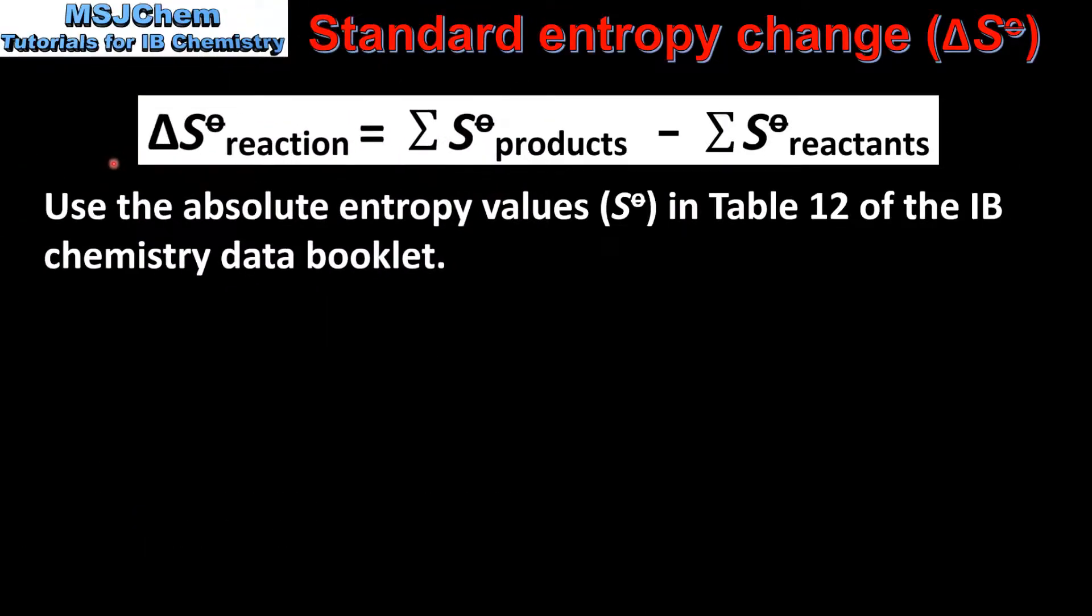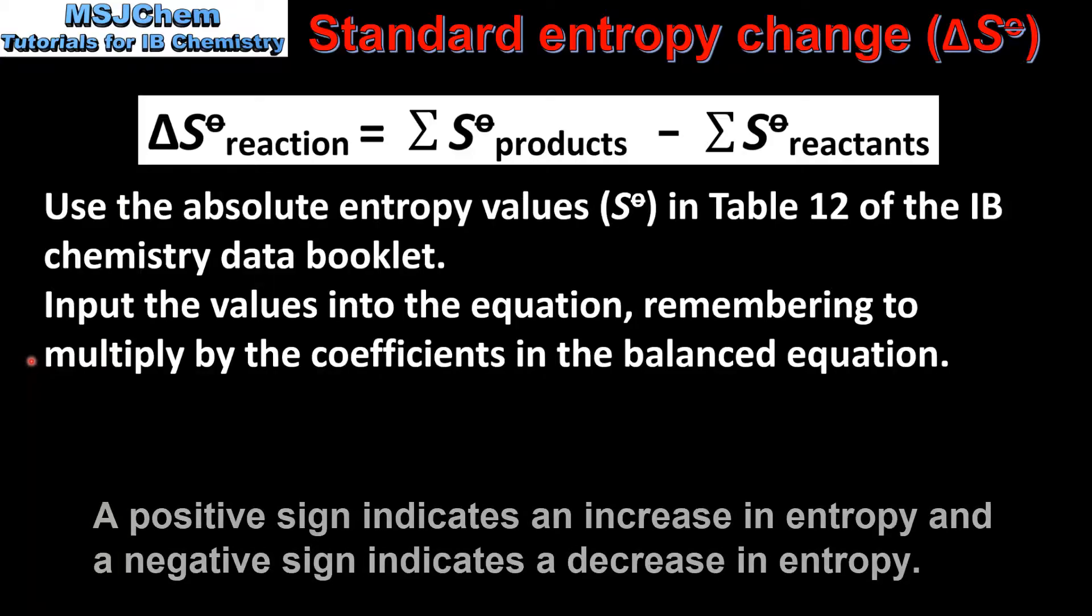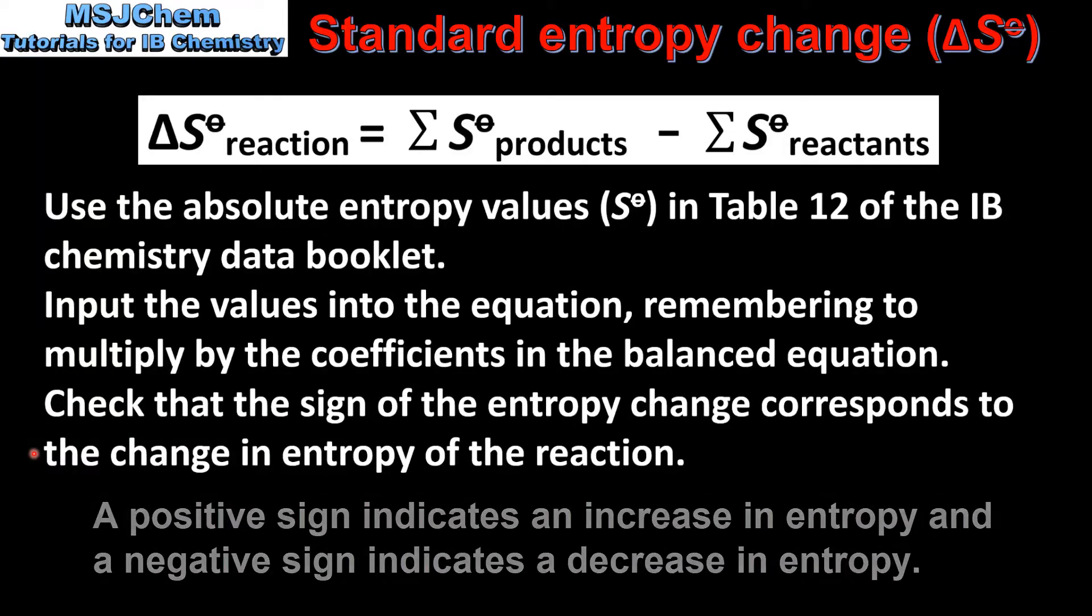So let's end with a summary. Here we have the equation to calculate the standard entropy change for a reaction. To do this we use the absolute entropy values in Table 12 of the IB chemistry data booklet. Then we input the values into the equation, remembering to multiply by the coefficients in the balanced equation. When you get your answer you should check that the sign of the entropy change corresponds to the change in entropy of the reaction.